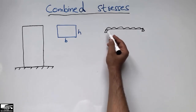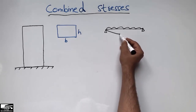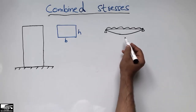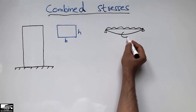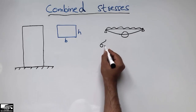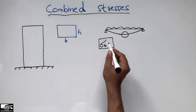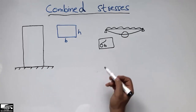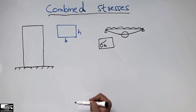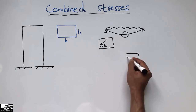For example, consider a simply supported beam with a uniformly distributed load. Due to this UDL, it creates a bending moment in the beam, so we only have bending stress in this beam, represented by Sigma B. Because of this load, there is only bending in this beam.